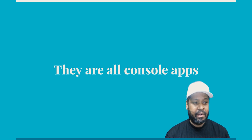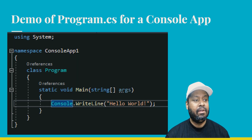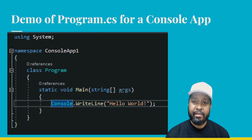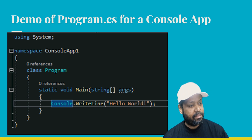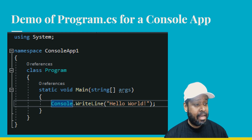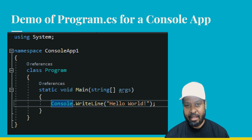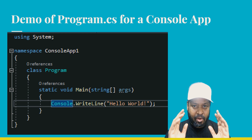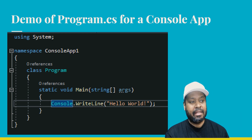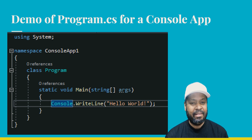Right now I'm going to show you a demo of what the program.cs file looks like after you click create a console app. This is an example of what that file looks like when you click on program.cs. As you can see, you have the program class, you have the main method, and it writes out hello world. That is a console app — no interface, just pure code functions.